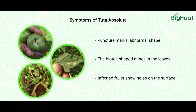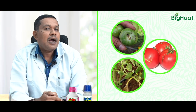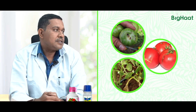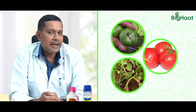It also shows symptoms on fruits as well. The pulp will be eaten by tuta worms, which then exit the fruit. The symptoms left on the fruit resemble bigger-sized bacterial speck spots, and the yield will be drastically reduced due to this Tuta absoluta attack.